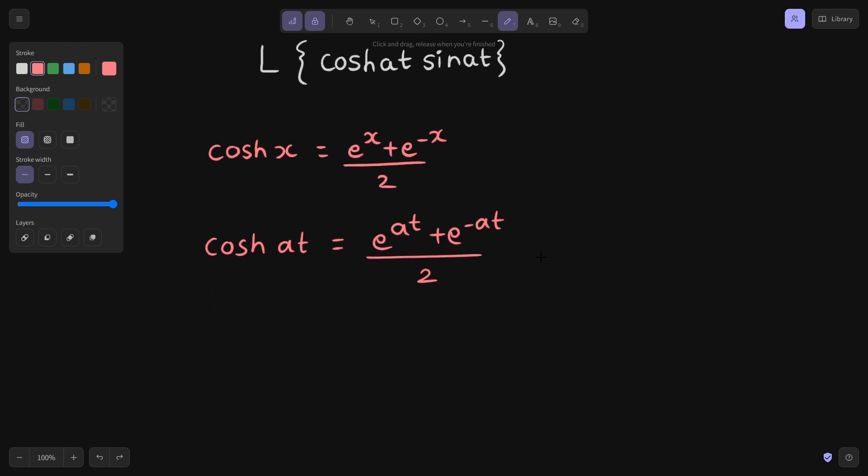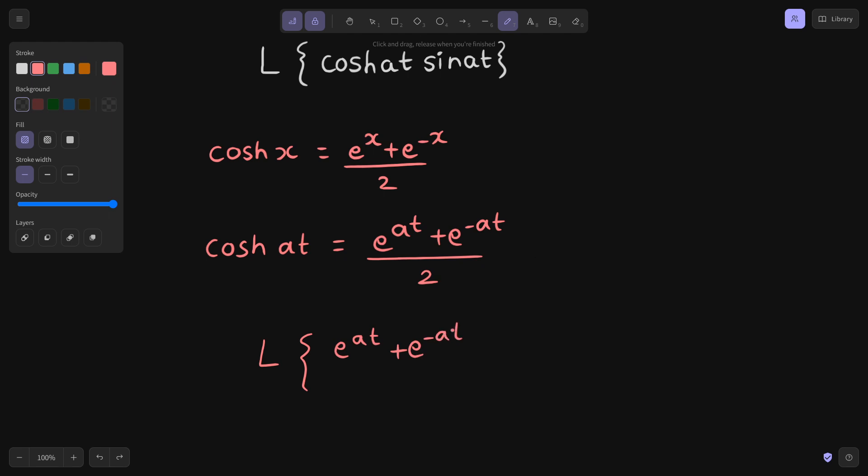Let's write this because we need to find the Laplace transform. So this will be e power at plus e power minus at divided by 2, and this is being multiplied by sine t.